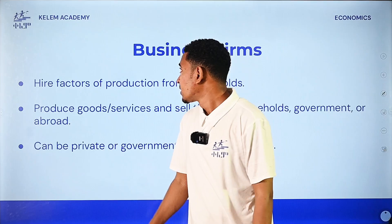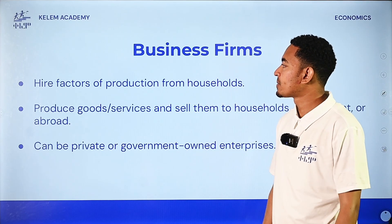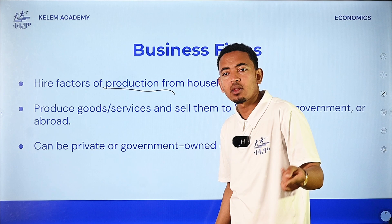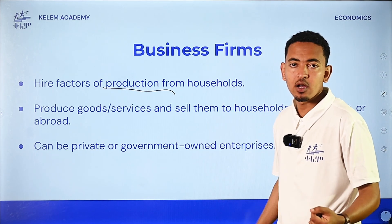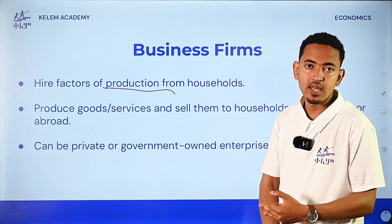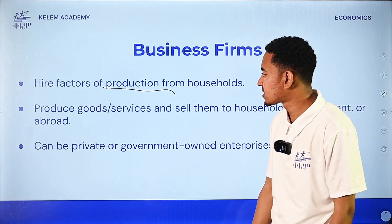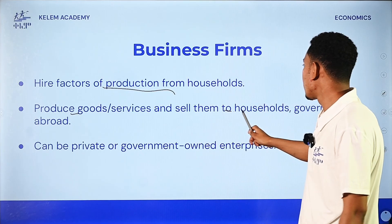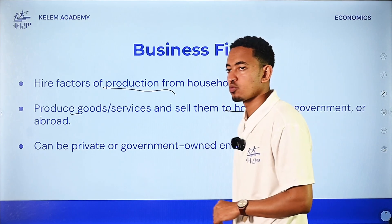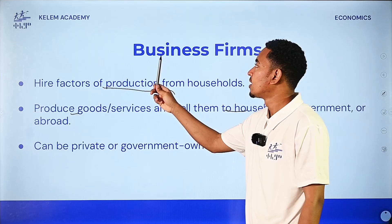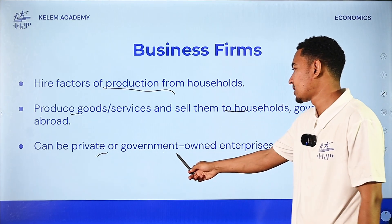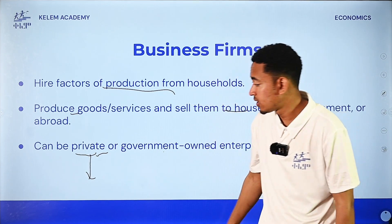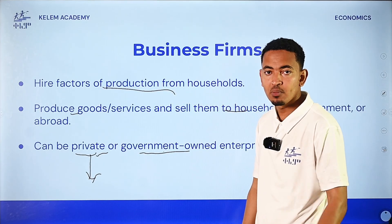The second decision-making unit is the firm. Firms hire higher factors of production from households and produce goods and services. Firms can be private or government-owned. There is no purely private sector in every case — there are also government-owned enterprises and state-owned enterprises.